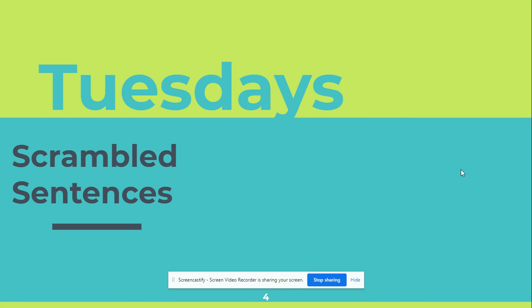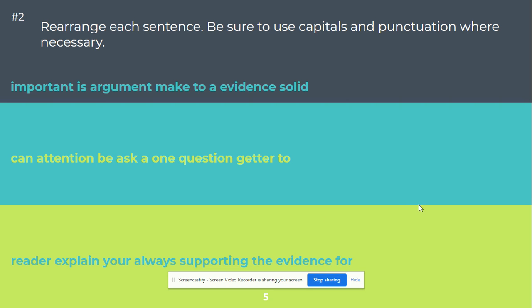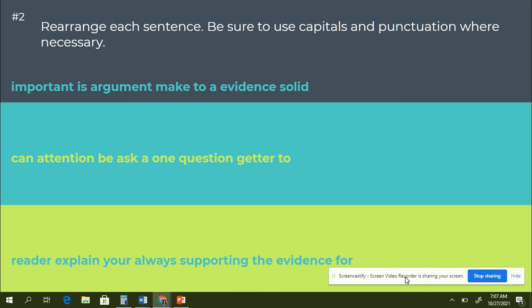Tuesdays, we're going to do scrambled sentences. Here are three examples of complete sentences that have been scrambled. So what you're going to do is you're going to go through and figure out what the unscrambled sentence would read. This might take you a couple times and that's okay. You cannot change any of the words and you have to use all of the words.